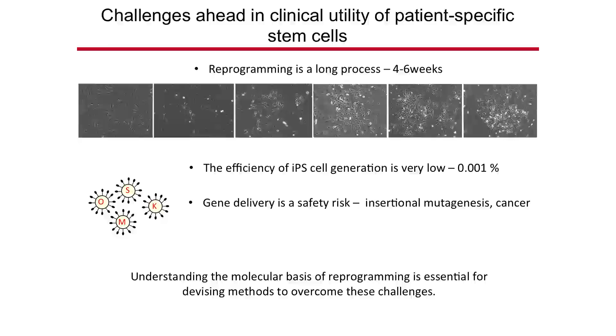We are molecular biologists and want to understand the mechanism of this conversion. Looking at what genes are different between skin cells and stem cells, we see that many genes differ. Out of 7,000 genes examined, all show differential activity. In skin cells, 7,000 genes are on or off according to the needs of that cell — for example, collagen is active in skin cells — but these are turned off, and other genes needed by stem cells are turned on.